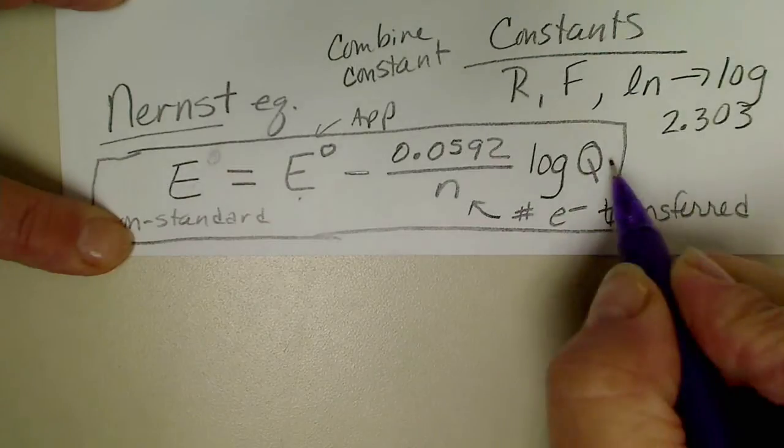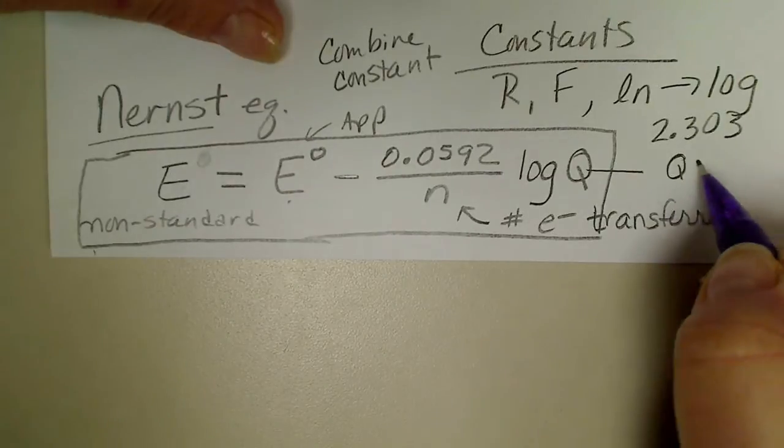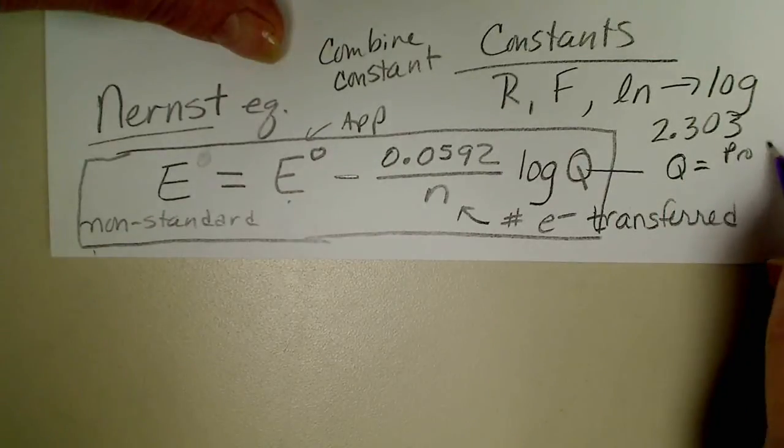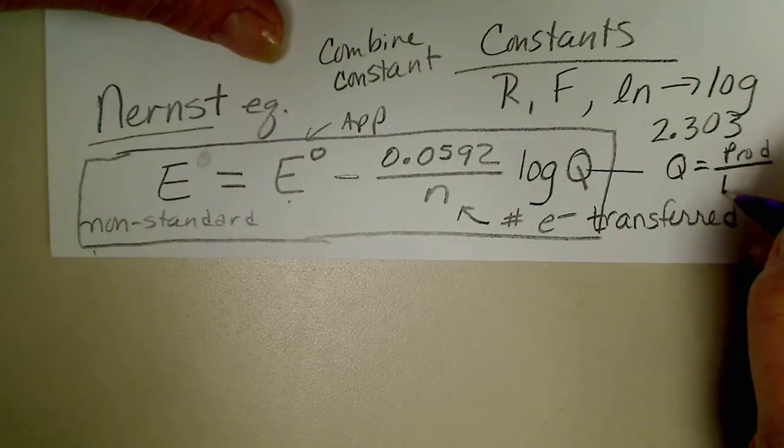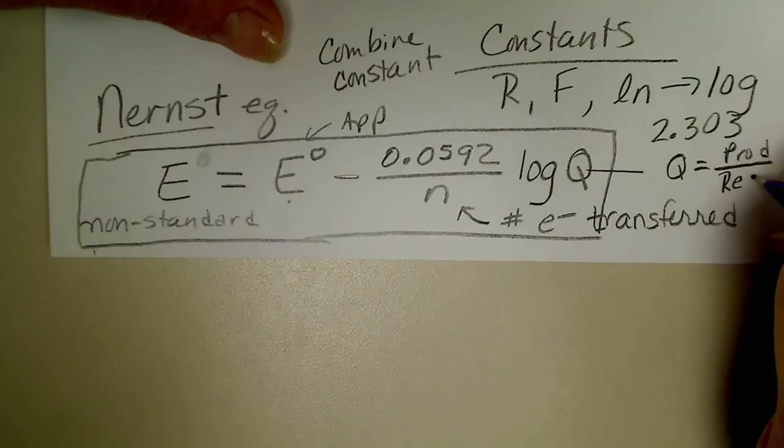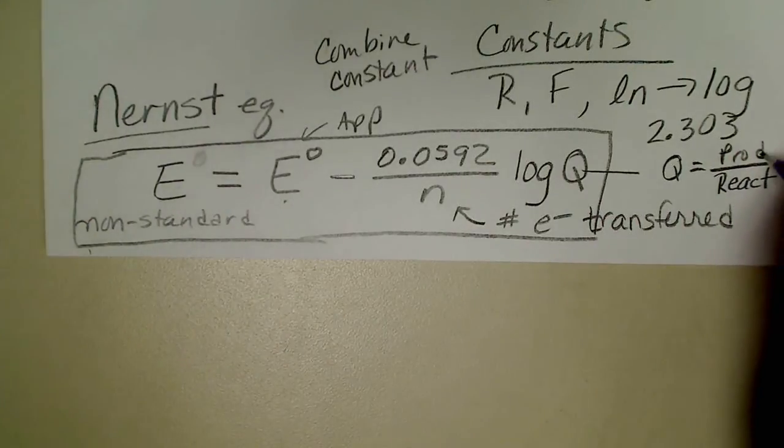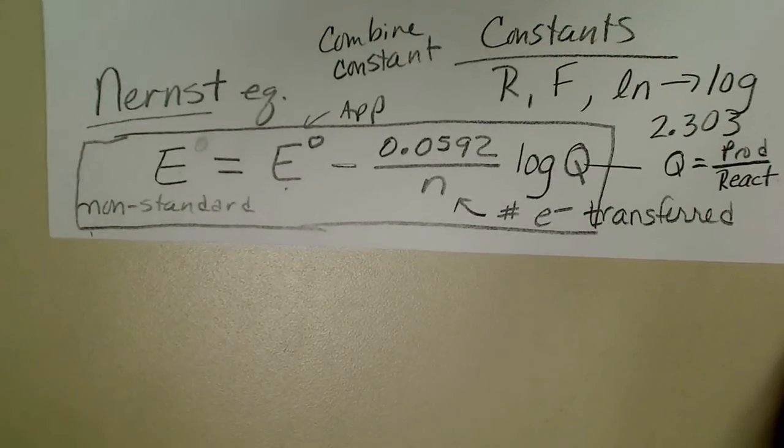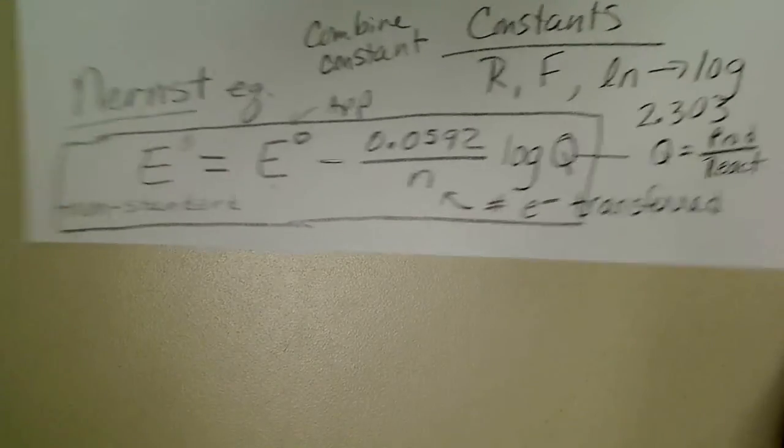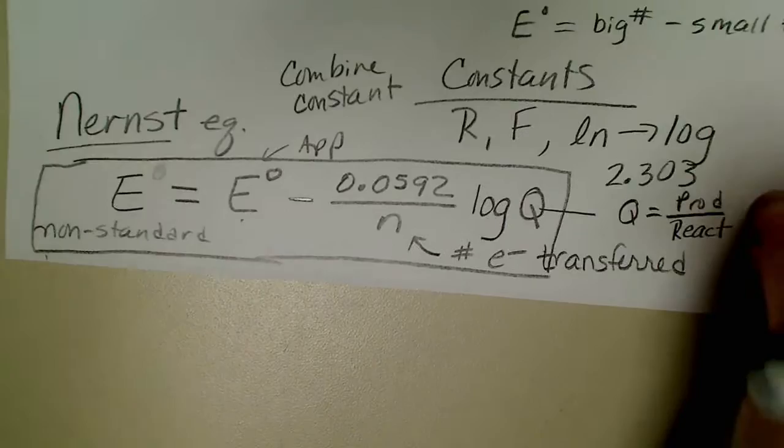And Q is still products over reactants. So if we had an electrochemical cell and our concentrations of our metal cells was not one molar then the value for Q would change. What's nice about this is the same concept that we used in a previous chapter.